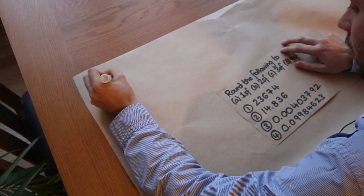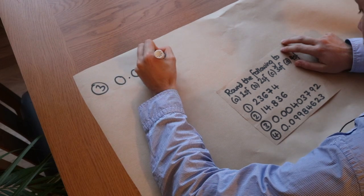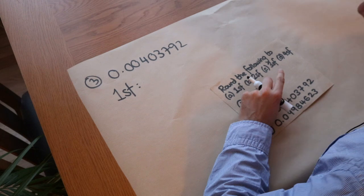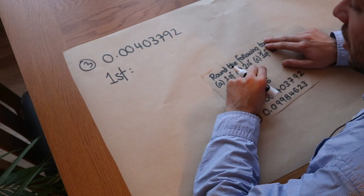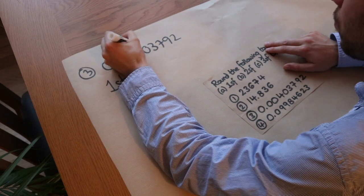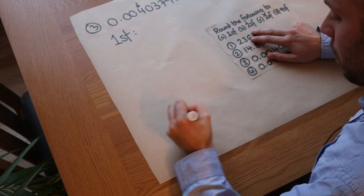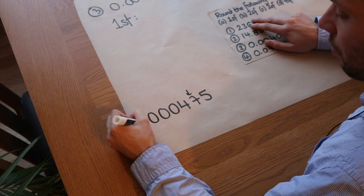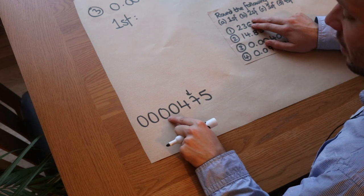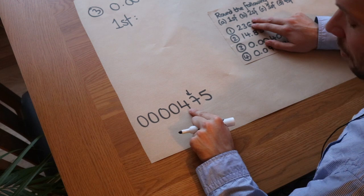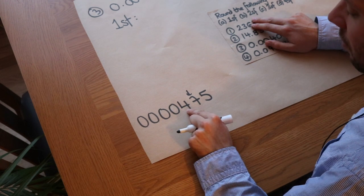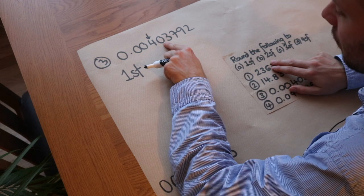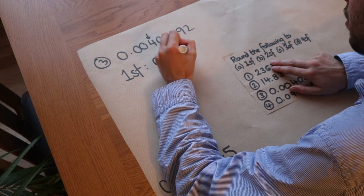The next number is 0.00403792 to one significant figure. This is where you have to be careful — we only start counting from the first non-zero digit. In this case the first non-zero digit is 4. The reason is that leading zeros are just placeholder zeros we don't write for whole numbers, but we still start counting from the first non-zero digit. So we look at the next digit after the 4 — is it greater than or equal to five? No it isn't, so that 4 stays as 4, giving 0.004.